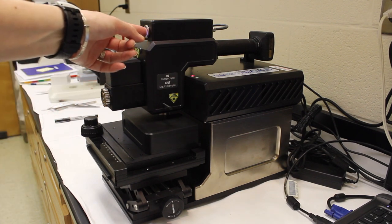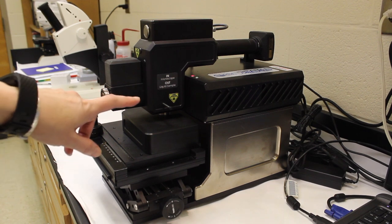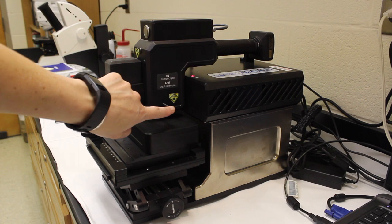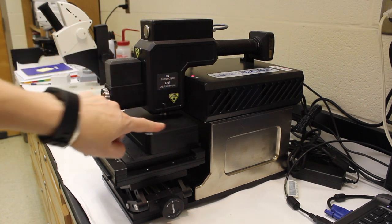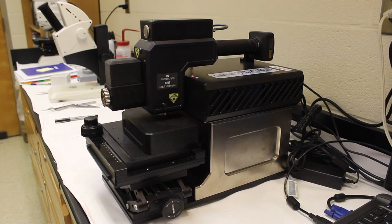Then we need to turn the LED light off for the same reason. We don't want the LED light shining on it while we're analyzing the sample. Then we put this toggle in so the laser goes into the microscope area and analyzes the material under the microscope.